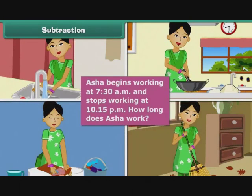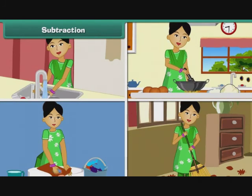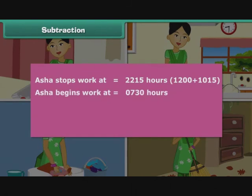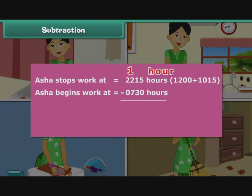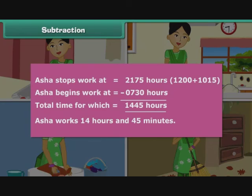Ashish begins work at 7:30 a.m. and stops working at 10:15 p.m. How long does Ashish work? We first express the times according to the 24-hour clock. Ashish stops work at 2215 hours, that is 1200 plus 1015. Ashish begins work at 0730 hours. We cannot subtract 30 from 15, so we borrow an hour — we add 60 minutes and subtract 1 from hours. After subtraction, Ashish works 14 hours and 45 minutes.